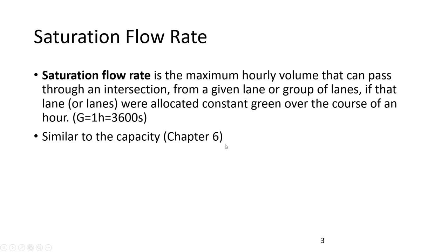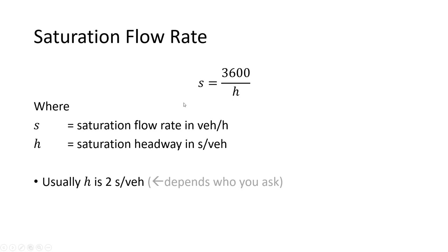It's very similar to the capacity we discussed in chapter six when looking at levels of service. Our saturation flow rate is 3,600 seconds divided by the saturation headway in seconds per vehicle. About the best you're going to get is about two seconds per vehicle — that's everybody moving along keeping very tight spacing with no big gaps in traffic flow. If you work that out, that's about 1,800 vehicles per hour.